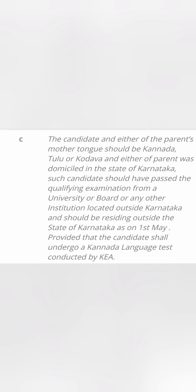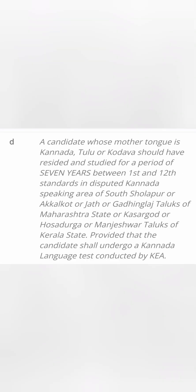Clause D is for candidates whose mother tongue is Kannada, Tulu, or Kodava — similar to the previous one — and they have studied a period of 7 years between 1st and 12th standard in disputed Kannada-speaking regions, which can be South Solapur district, Akalkot, Jat, or other taluks on the Maharashtra-Karnataka border or on the Kerala border. These students are also eligible under Clause D and must write the Kannada language test.